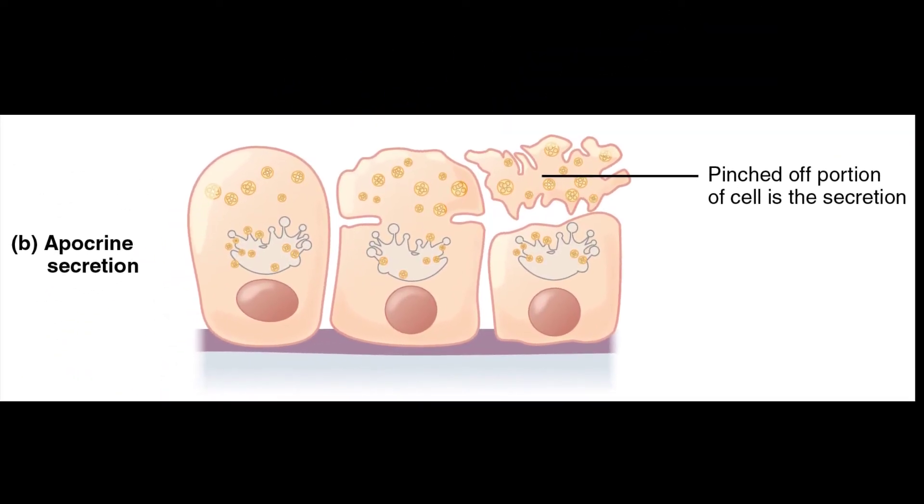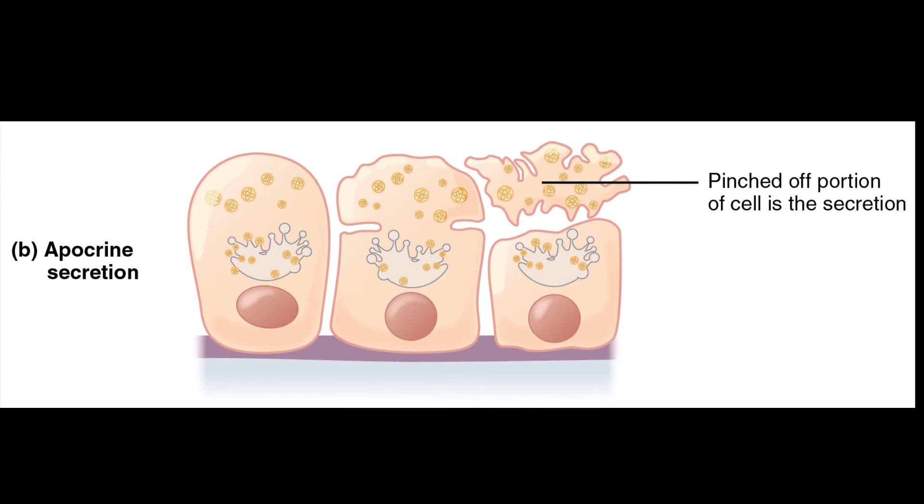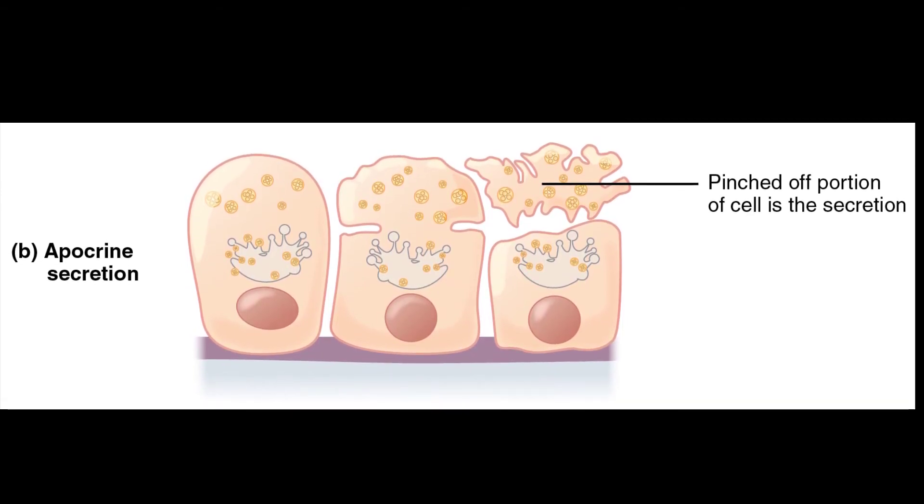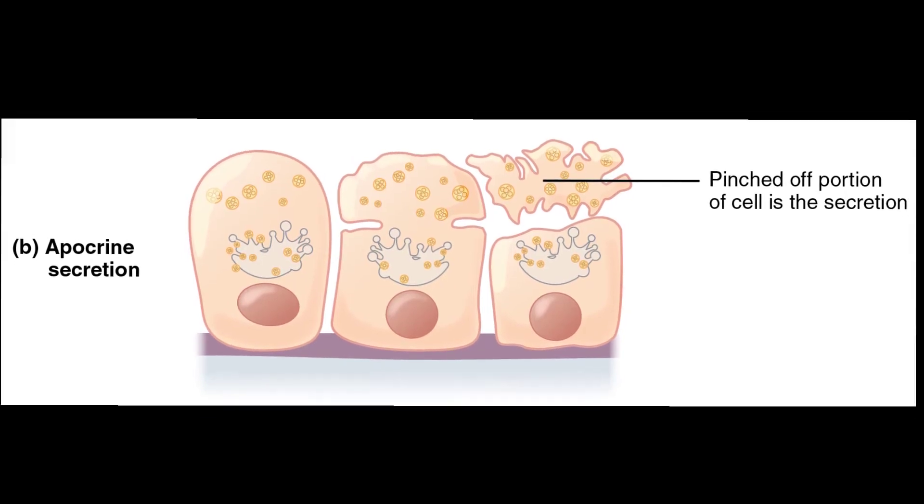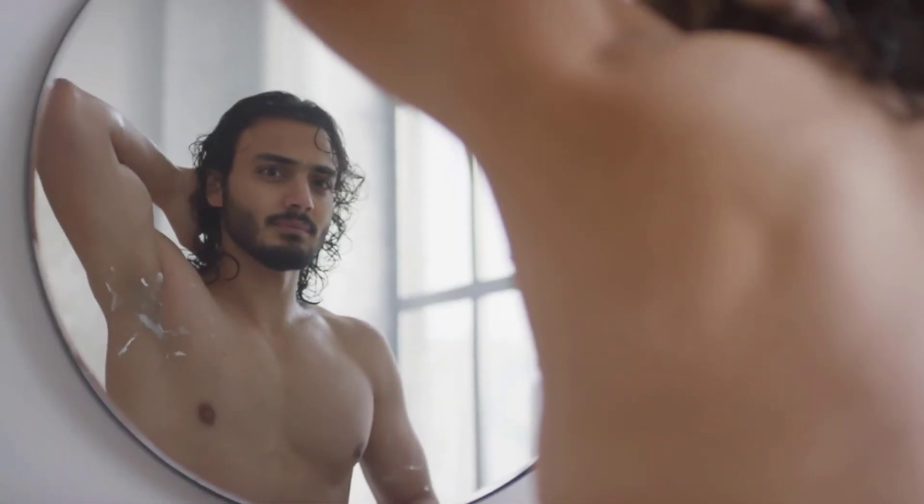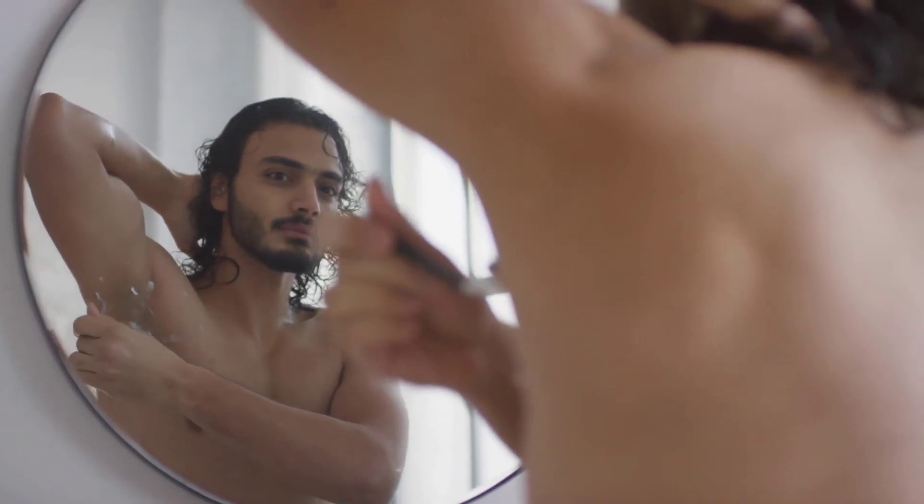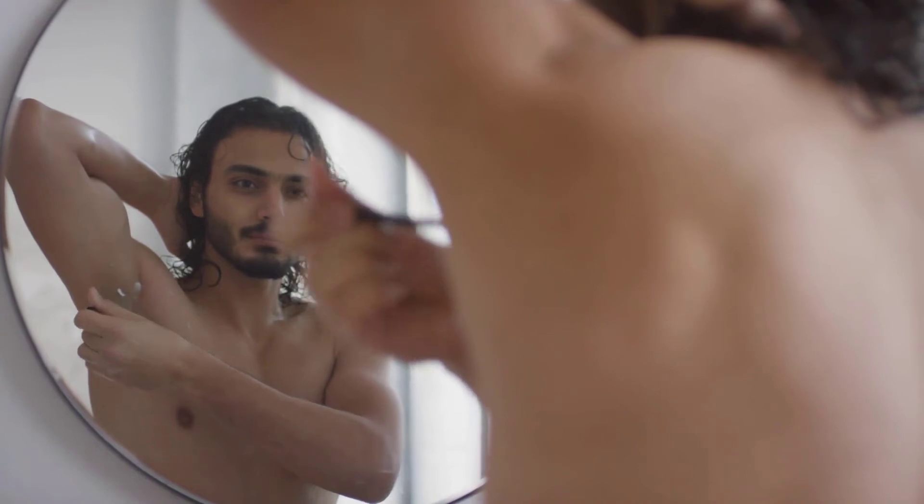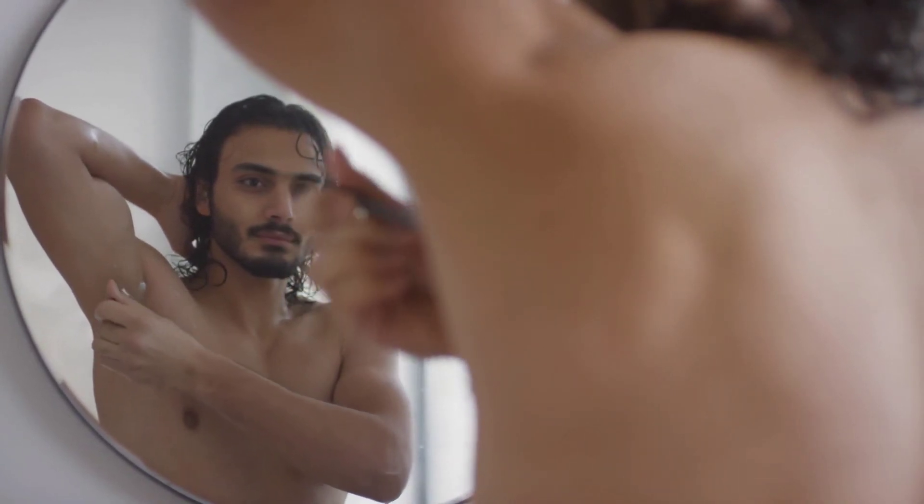Apocrine secretion accumulates near the apical portion of the cell. That portion of the cell and its secretory contents pinch off from the cell and are released. Apocrine sweat glands in the axillary and genital areas release fatty secretions that local bacteria break down. This process causes body odor.